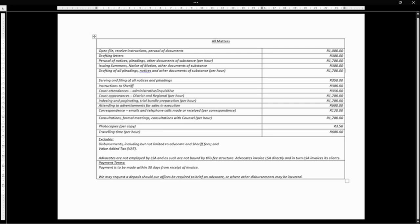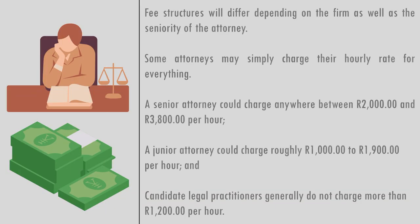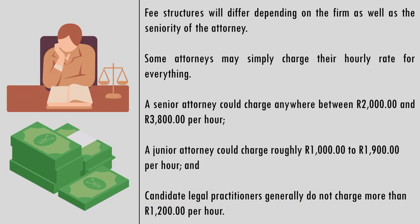The fee structure specifically makes mention of what it excludes, such as disbursements — including advocates and sheriff fees — and VAT. It also makes mention of the payment terms, being 30 days from receipt of invoice, and the fact that deposits may be required. Take note that fee structures will differ depending on the firm as well as the seniority of the attorney.